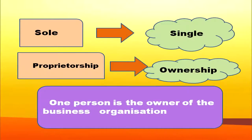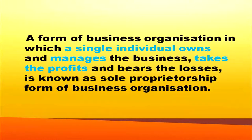Coming to the meaning of sole proprietorship — it is a form of business organization where one person is the owner. Sole means single and proprietorship means ownership. So, single ownership: a form of business organization in which a single individual owns and manages the business, takes the profit and bears the losses, is known as sole proprietorship form of business organization. Managed by one person, owned by one person, profit fully enjoyed by him — that is sole proprietorship.